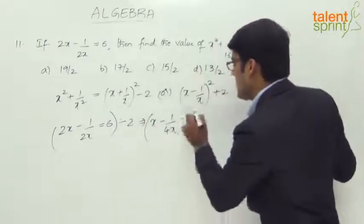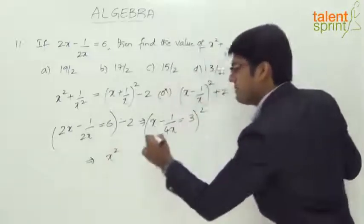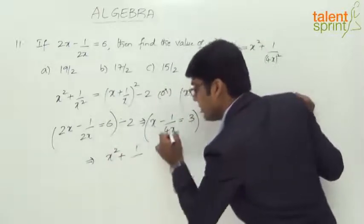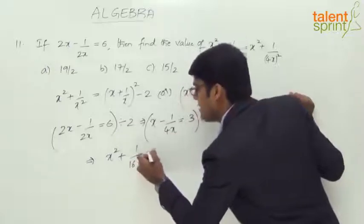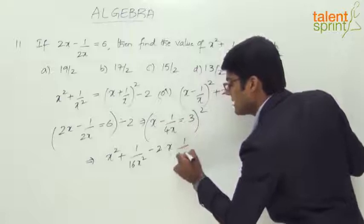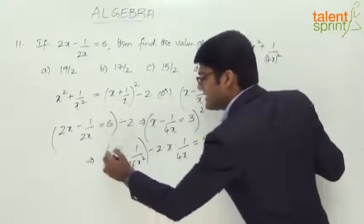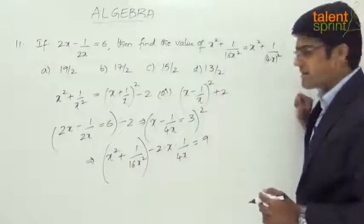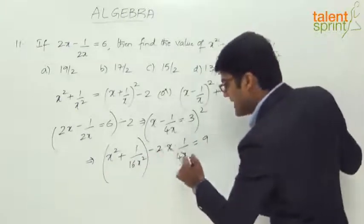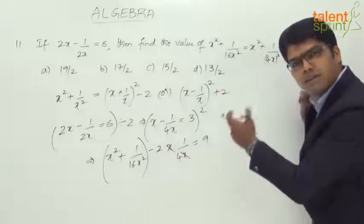So squaring on both sides, what do we get? x squared plus 1 by 4x squared, which is nothing but 16x squared minus 2 into x into 1 by 4x equals 3 squared, which is 9. And our requirement here is x squared plus 1 by 16x squared. So x and x anyway gets cancelled. What are we left with? Minus 2 by 4, which is minus 1 by 2.